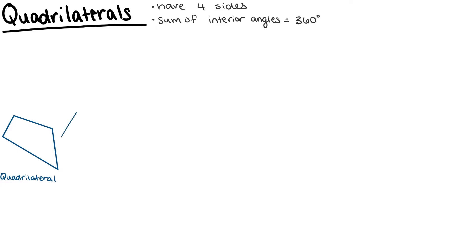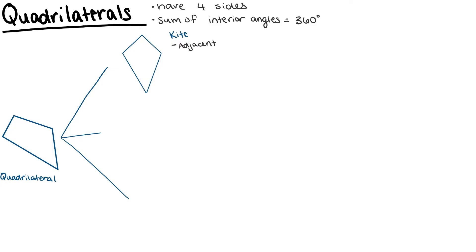We may have a quadrilateral that looks like this. Here, adjacent sides are congruent. So our two sides at the top are congruent to each other, and our two sides at the bottom are congruent to each other. And one pair of opposite angles are congruent.